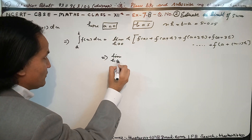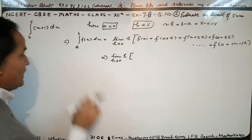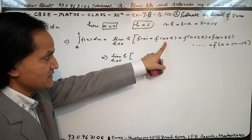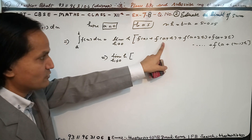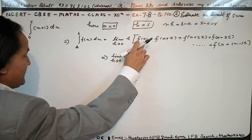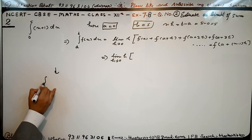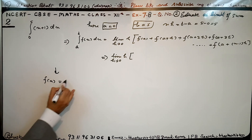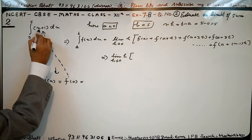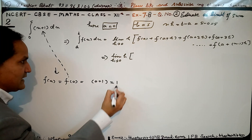अब हम इसको applicable करते हैं। limit as h tends to 0 पर देखिए f(a), यानि f(0)। x के place में 0 रखिए — 0 + 1 = 1। तो f(a) = 1 आ गया।